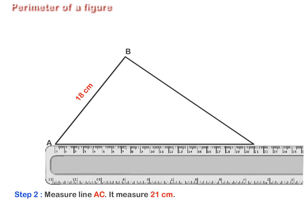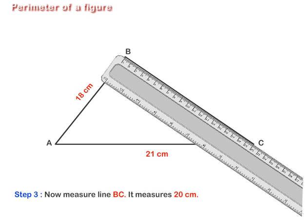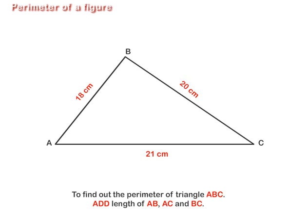Step 2: Measure line AC. It measures 21 cm. Step 3: Now measure line BC. It measures 20 cm. To find out the perimeter of triangle ABC,